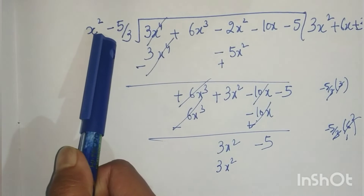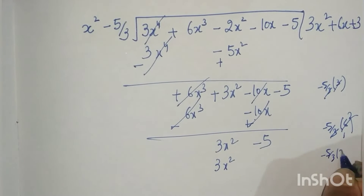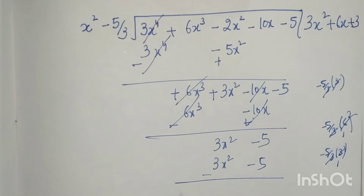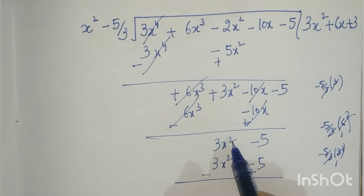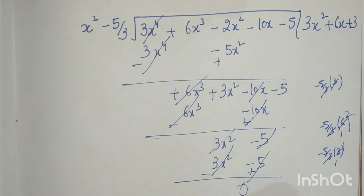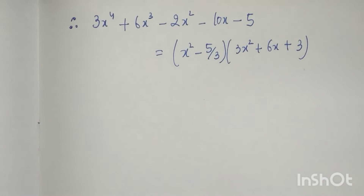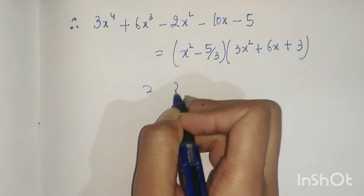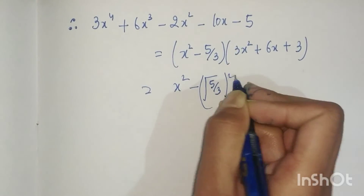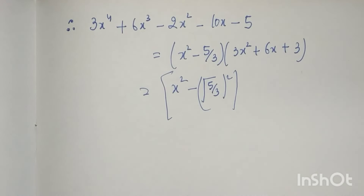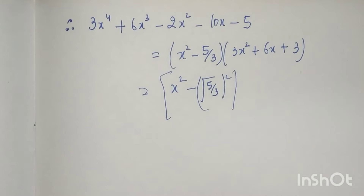Continuing the long division: signs change, plus terms and minus terms cancel. We get 3x² becoming -5. After sign changes and cancellations, the remainder is 0. So the dividend equals divisor times quotient plus 0. We can write x² - 5/3 as x² - (√(5/3))².